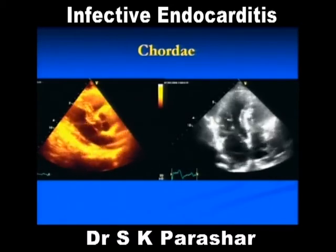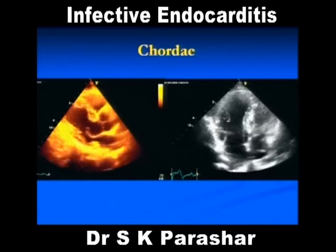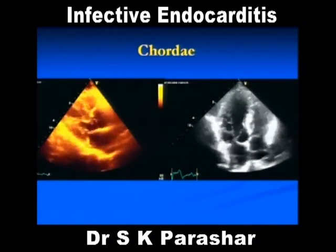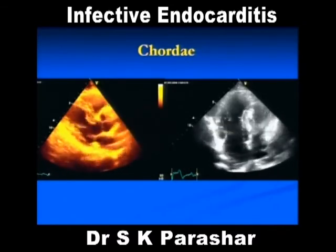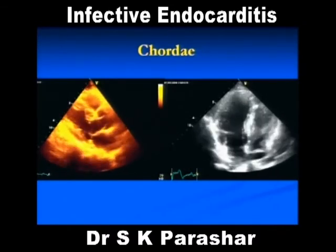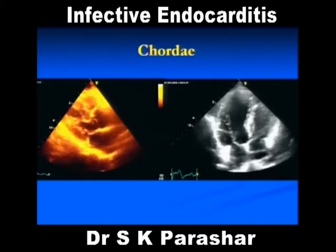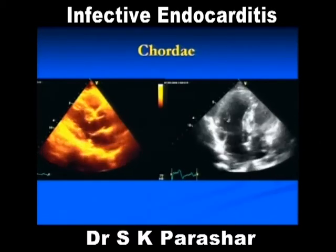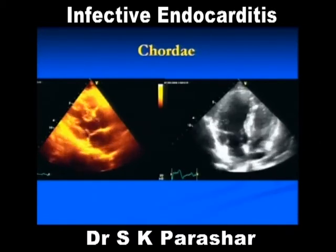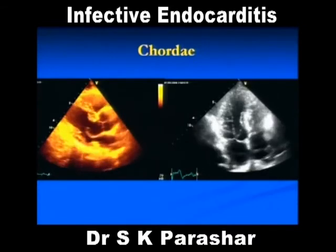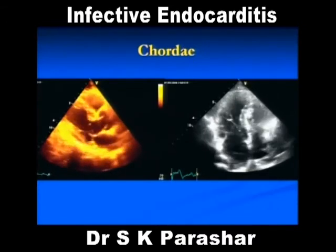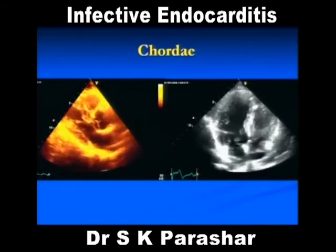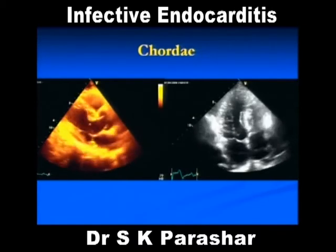This prominent chorda can be confused with a vegetation, but why is it not a vegetation? Number one: the patient may not have any constitutional symptoms. Number two: there may be no MR or anything. Number three: it moves together with the valve. Number four: it is attached to the tip of the leaflet and not from the atrial side. These are some of the differential diagnoses.